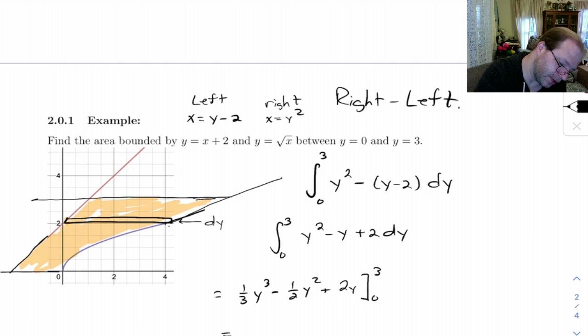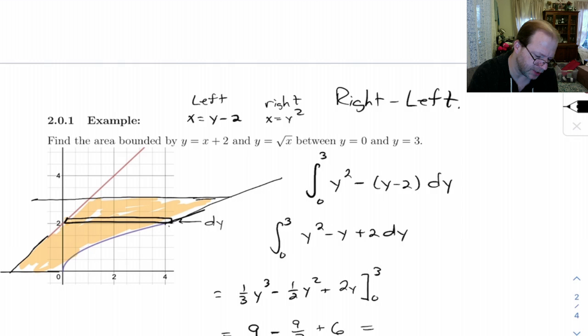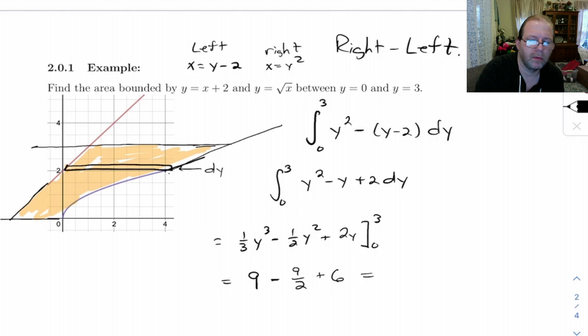We'll plug the 3 in. Let's see, 3 cubed is 27 over 3 is 9 minus 9 halves plus 6. So, what is that? It's 9 halves. Well, let's see, 9 plus 6 is 15, so that's 30 halves minus 9 halves is 21 over 2.